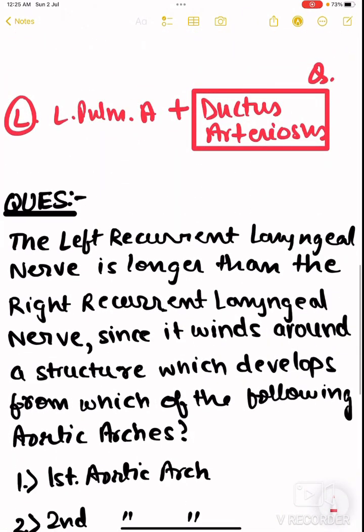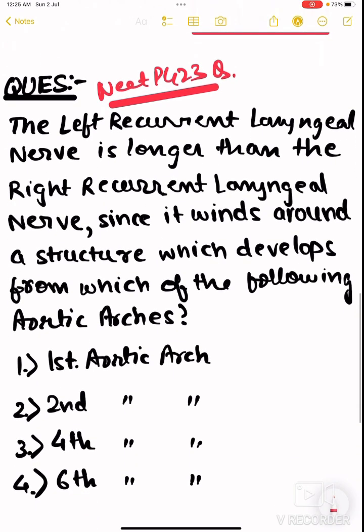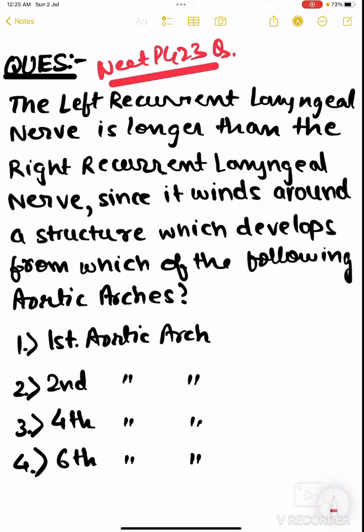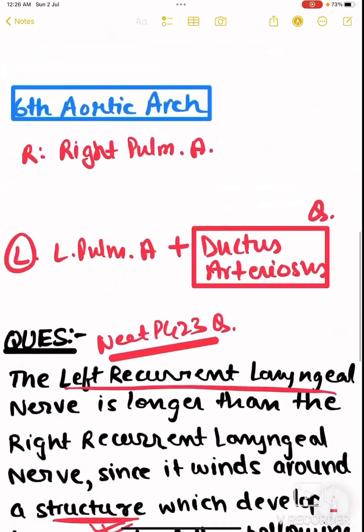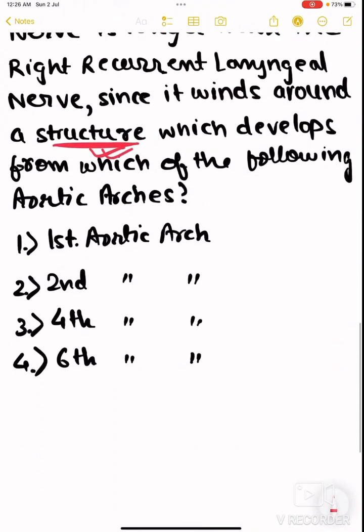Now, a question from NEET PG 2023: 'The left recurrent laryngeal nerve is longer than the right recurrent laryngeal nerve since it winds around a structure which develops from which of the following aortic arches?' The structure in question is the ductus arteriosus — or after birth, the ligamentum arteriosum — which the left recurrent laryngeal nerve winds around. The ligamentum arteriosum is a derivative of the ductus arteriosus.